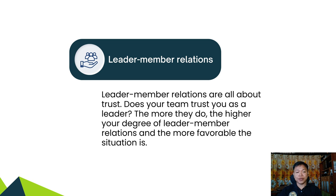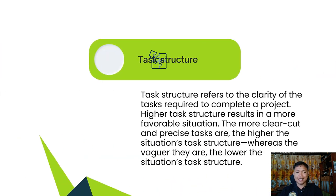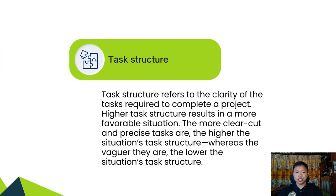Task structure refers to the clarity of the task required to complete a project. Higher task structure results in a more favorable situation. The more clear-cut and precise the tasks are, the higher the situational task structure. Whereas the more vague they are, the lower the situational task structure.